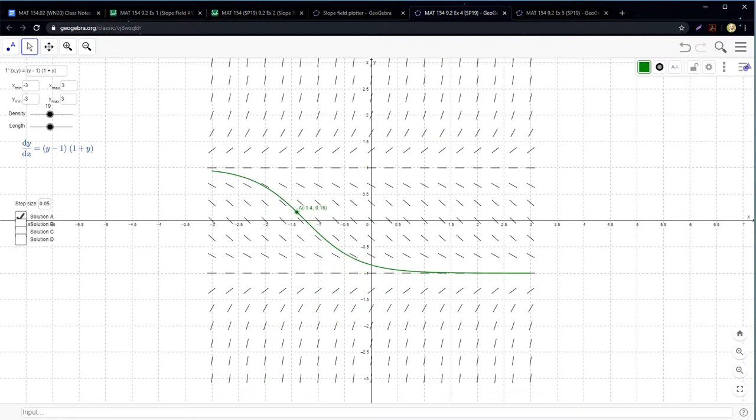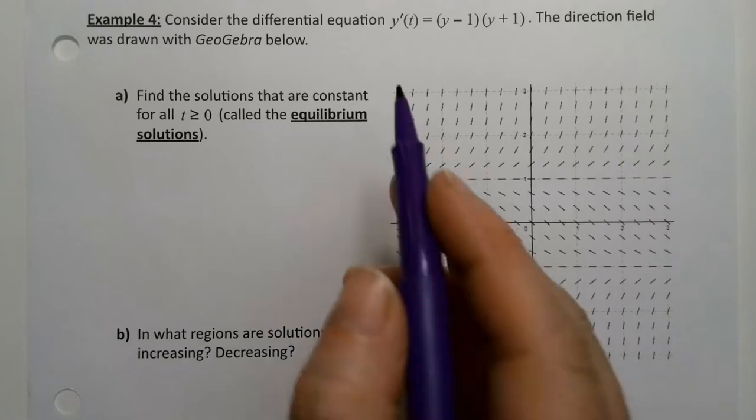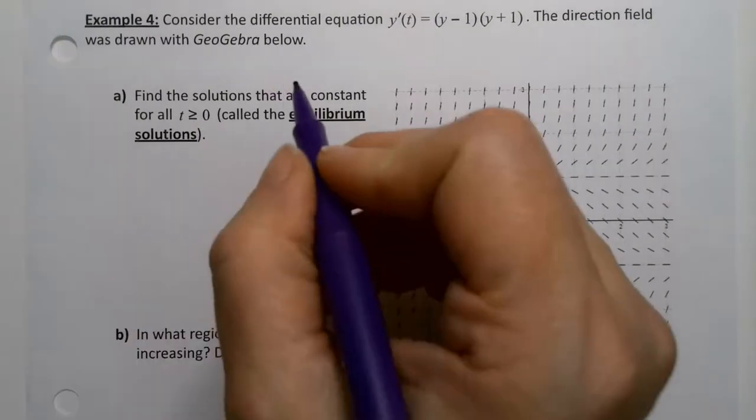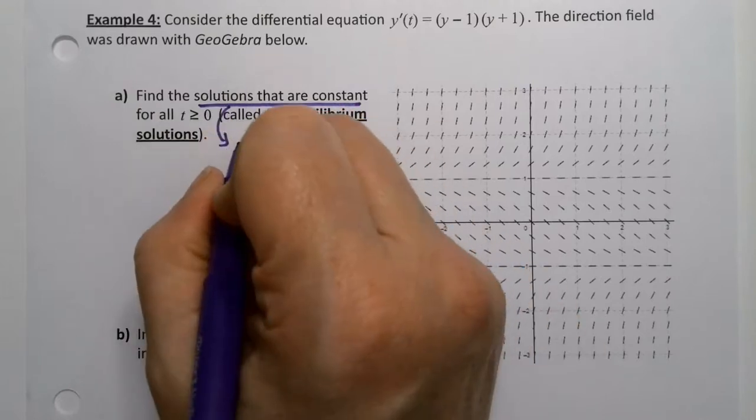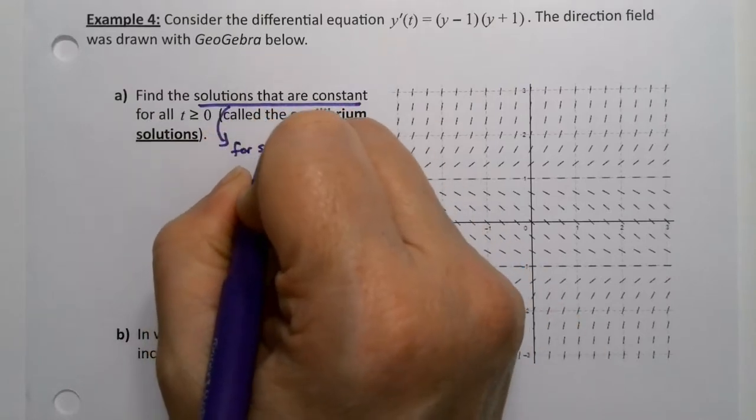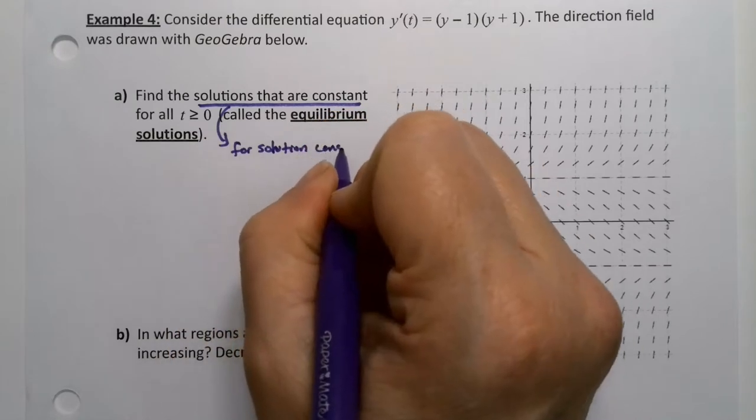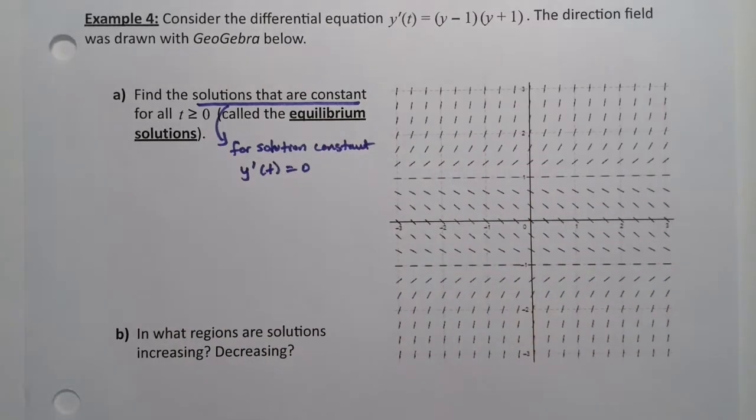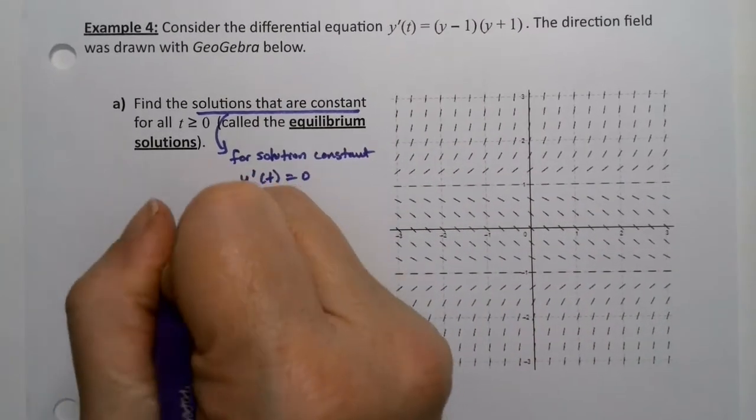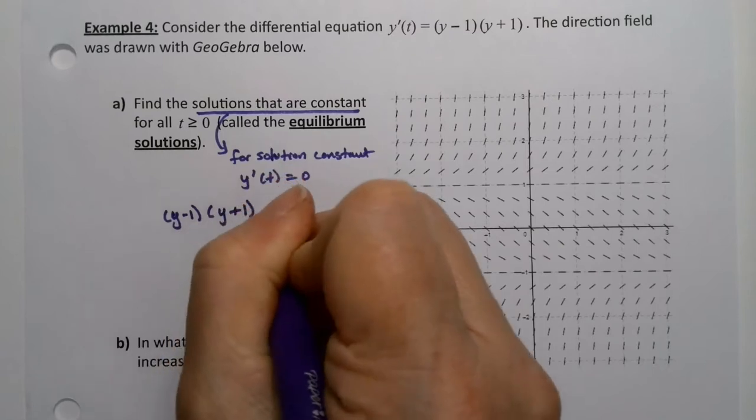The answer is there's two places, because if it's constant, it means that the derivative y' would be equal to 0. So for the solution to be constant, y' has to be equal to 0. Now where would that take place? So (y - 1)(y + 1), because that's what y' is, would have to be 0.